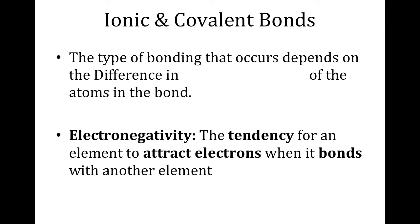That was all we had for metallic properties. There are four properties you're responsible for and their reasonings. Now we're going to introduce ionic and covalent bonds. Most of you are probably familiar with these from middle school science. First, we're going to look at how electronegativity relates to these two bonds. The type of bonding that occurs depends on the difference in electronegativity of the atoms in the bond. In metallic bonds, the difference was always zero because we had the exact same element. Electronegativity is the tendency for an element to attract electrons when it bonds with another element — the higher the electronegativity, the stronger it wants to attract electrons.